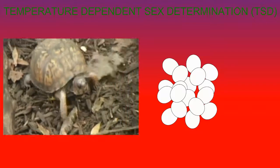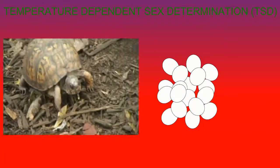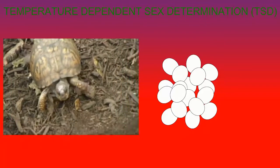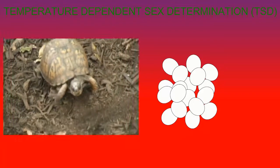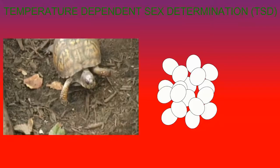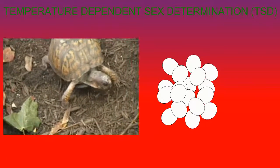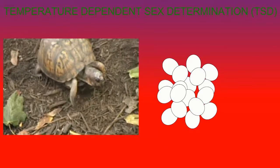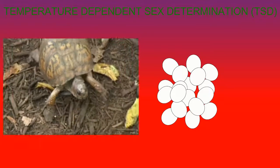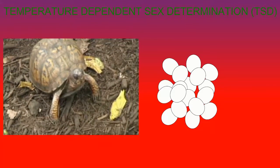In many organisms, it is not gender dimorphic chromosomes which determine gender, but rather temperature variations. There is some aspect of gender development which will develop along one pathway at one temperature, but the pathway for the opposite gender at a different temperature.